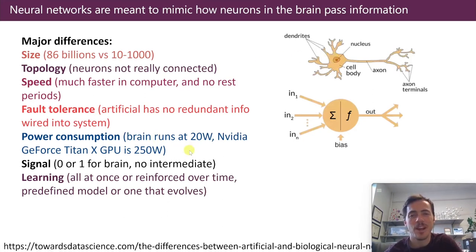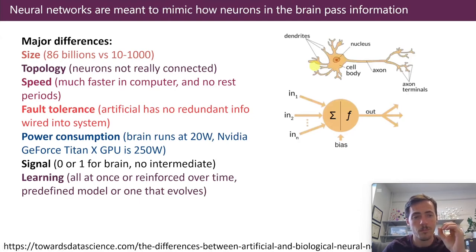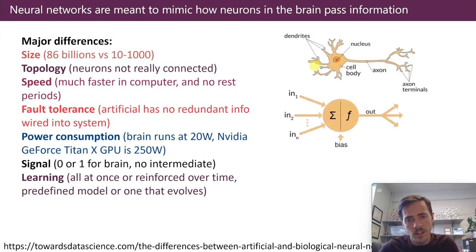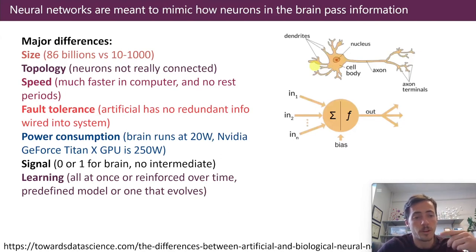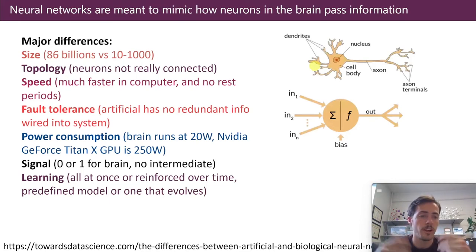Power consumption is another difference: your brain runs at about 20 watts, significantly lower than current graphics cards which run at around 250 watts. The signal is also different: a biological neuron either fires or it doesn't — it's one or zero — but in a neural network we can pass forward intermediate values anywhere between zero and one. Finally, learning is different. In your brain, you're learning all the time — more like reinforcement learning, constantly evolving connections. But in our case, we do most of our learning up front in a predefined model.